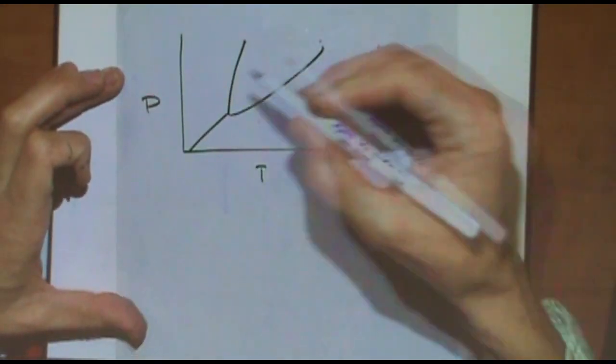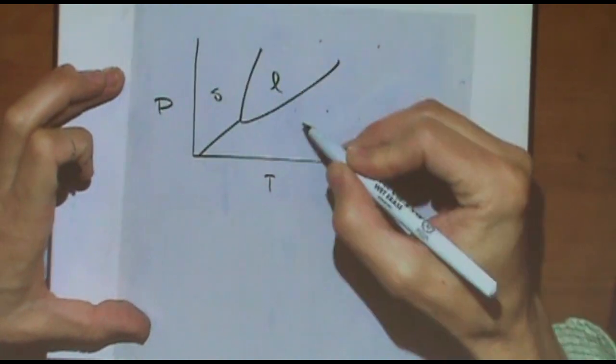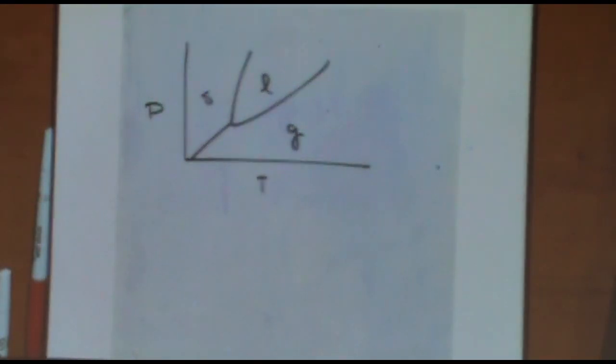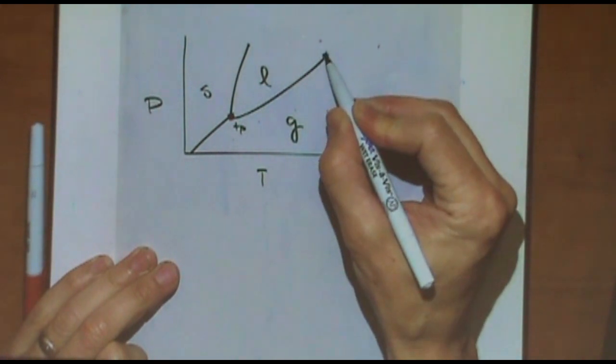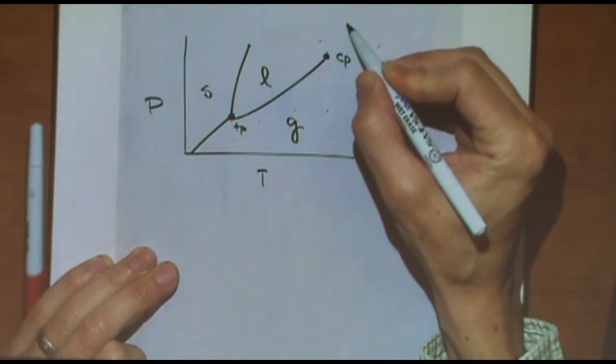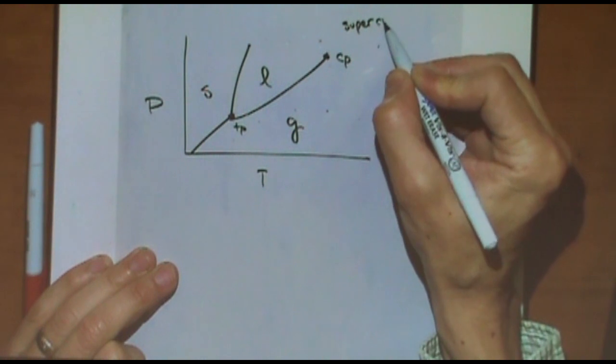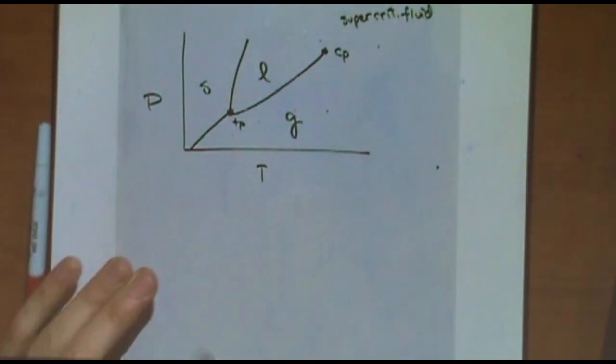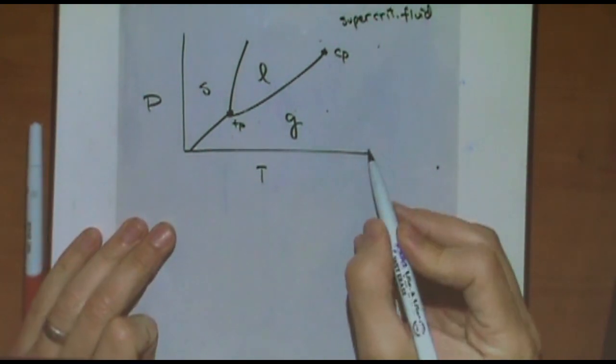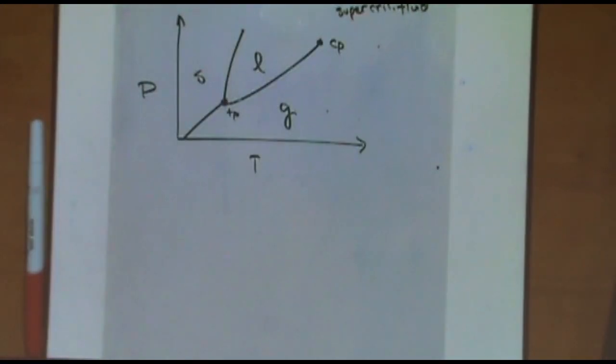If you're in an engineering or physics class, you might need to memorize all different kinds of phase diagrams. Different compounds have different phase diagrams. I'm not looking for that in our class. I just want to know, do you know the generic phase diagram or not? You need to know where the triple point is, where the critical point is. This is the supercritical fluid up here.